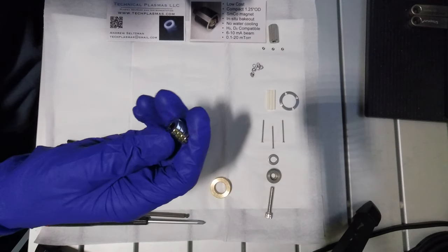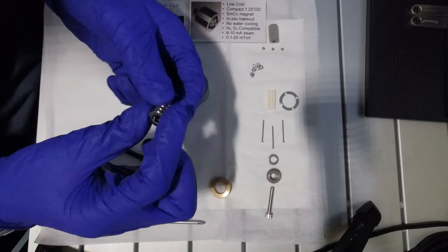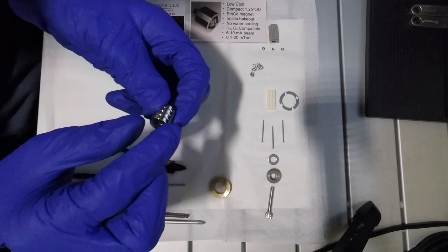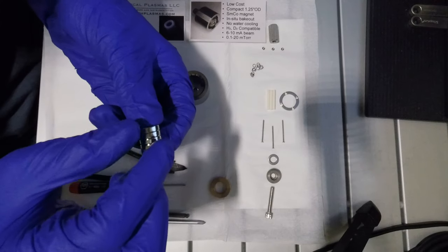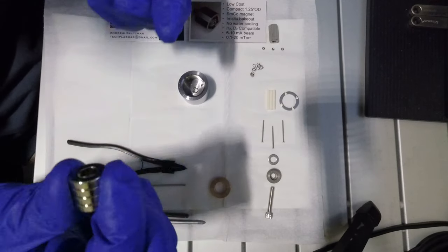It will be a stack of four samarium cobalt magnets. Half inch outer diameter, quarter inch inner diameter. Four of them each an eighth inch thick for a half inch total thickness.